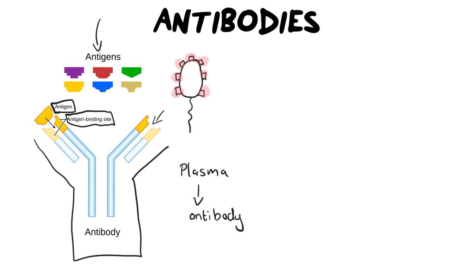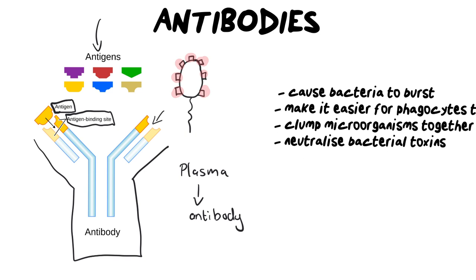Essentially, antibodies do their job in a couple of ways. The first thing they do is cause bacteria to burst. They get stuck on the outside of the bacterial cell — the antibodies attach to the surface, connecting via those indentations where the antigens connect. This causes a deterioration or breakdown of the bacteria's cell wall and cell membrane. Basically, the bacteria ends up breaking open and leaking out, losing all of its DNA, and it dies.